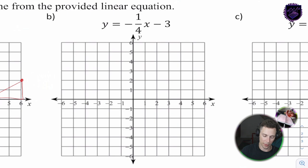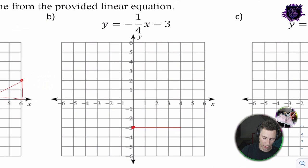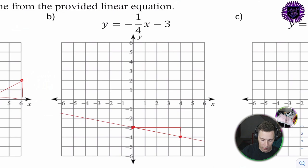For 5b: the y-intercept is negative 3. The slope is negative 1/4 — go 4 over and 1 down. There's our next point on the graph. Graph the line as accurately as possible — there it is.